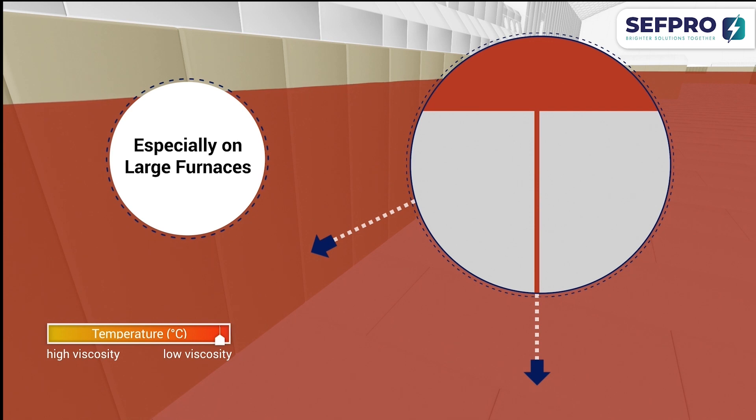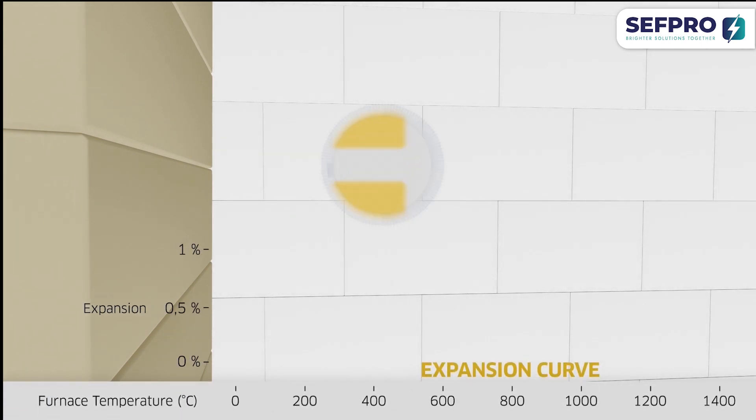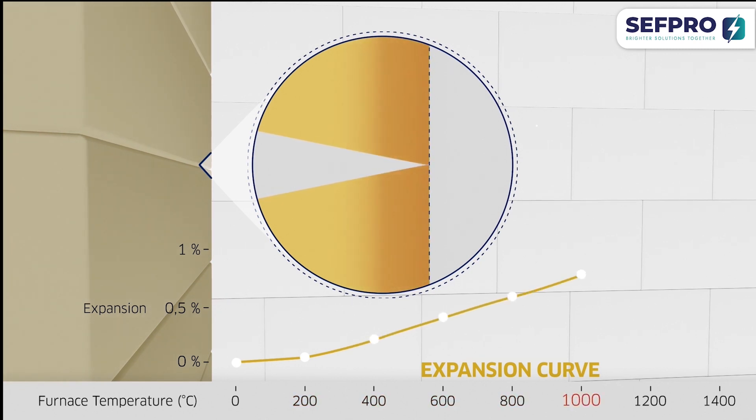But why is this? Let's take a closer look. When glass temperature rises, the joints close. This is due to the temperature expansion behavior of AZS material. But after a certain temperature is reached, this behavior inverts.